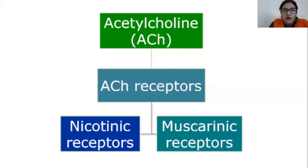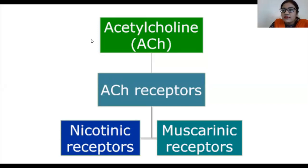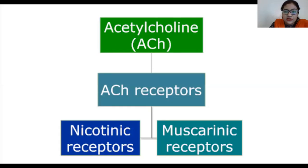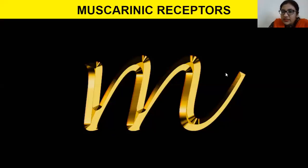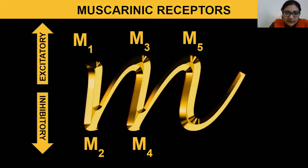There are two kinds of cholinergic receptors: nicotinic receptors and muscarinic receptors. In this lesson we are going to focus on muscarinic receptors. Muscarinic receptors are represented by the letter M and are numbered because there are five in total: M1, M2, M3, M4, and M5.